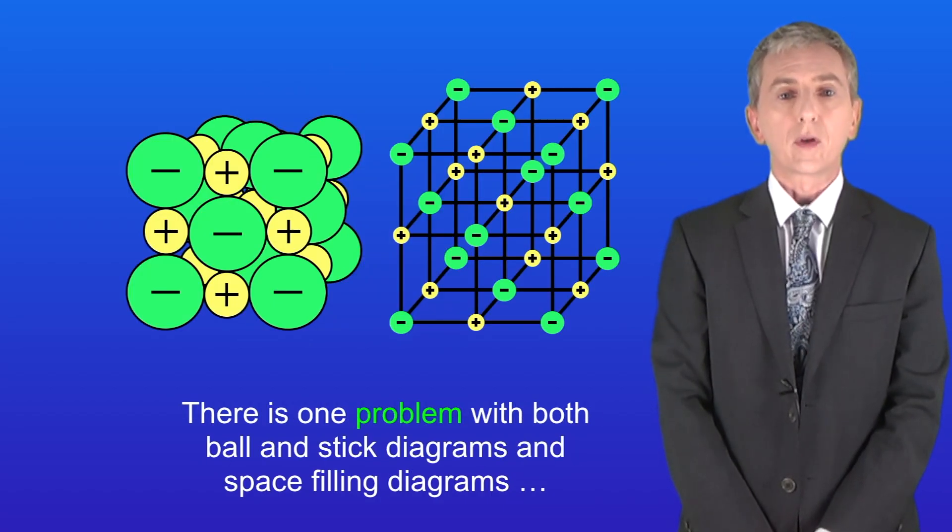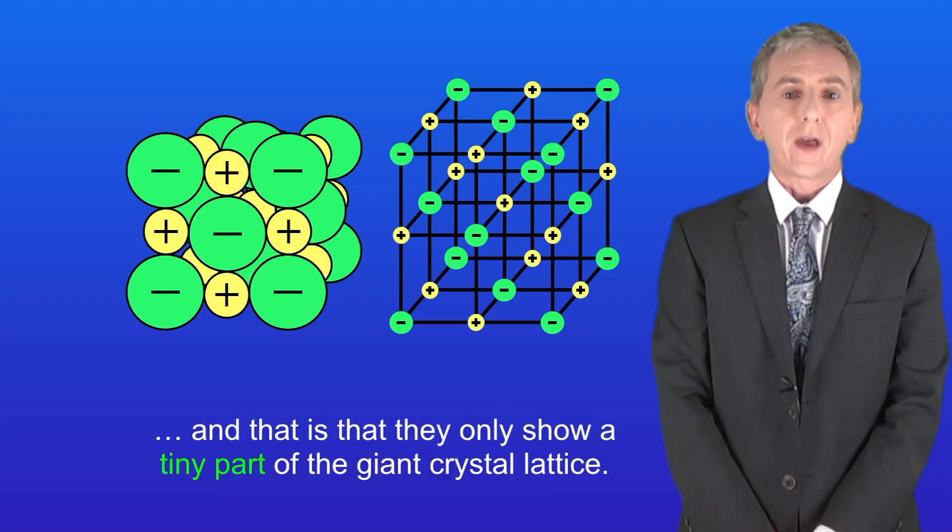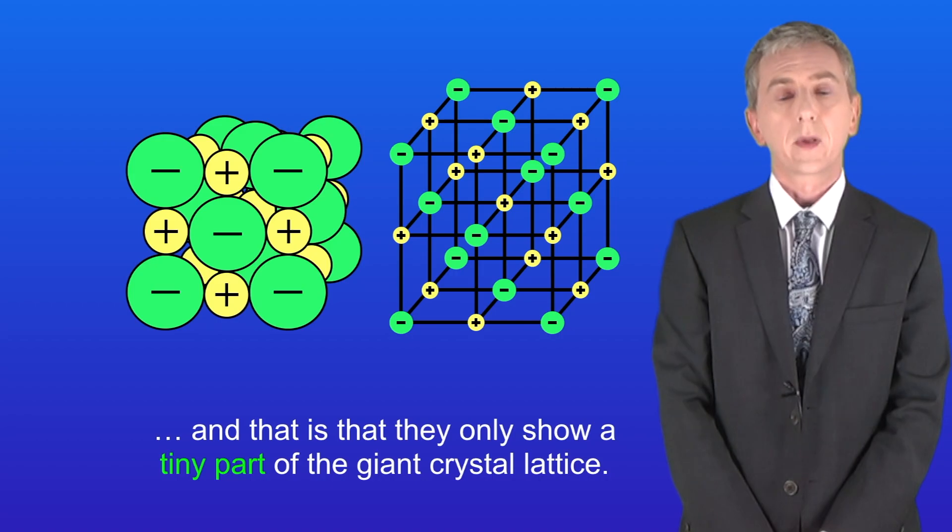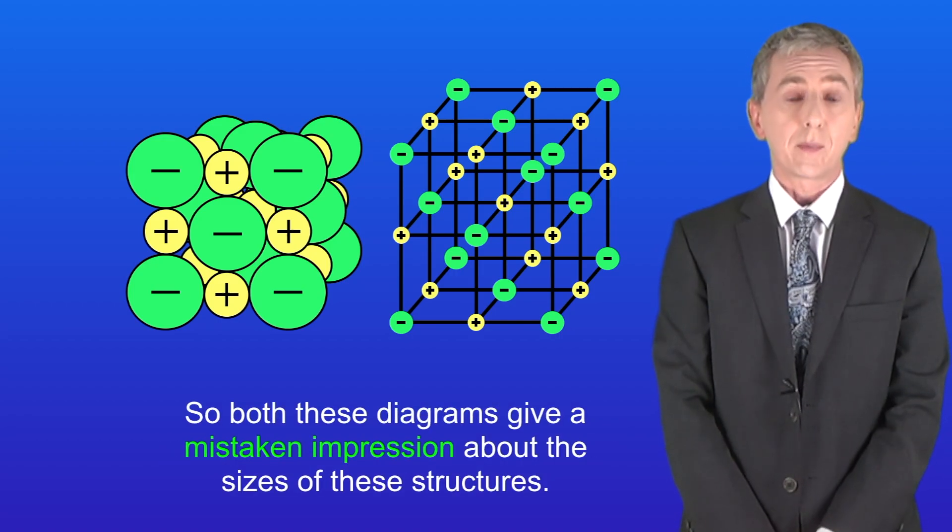Now there is one problem with both ball and stick diagrams and space filling diagrams, and that is that they only show a tiny part of the giant crystal lattice. So both these diagrams give a mistaken impression about the sizes of these structures.